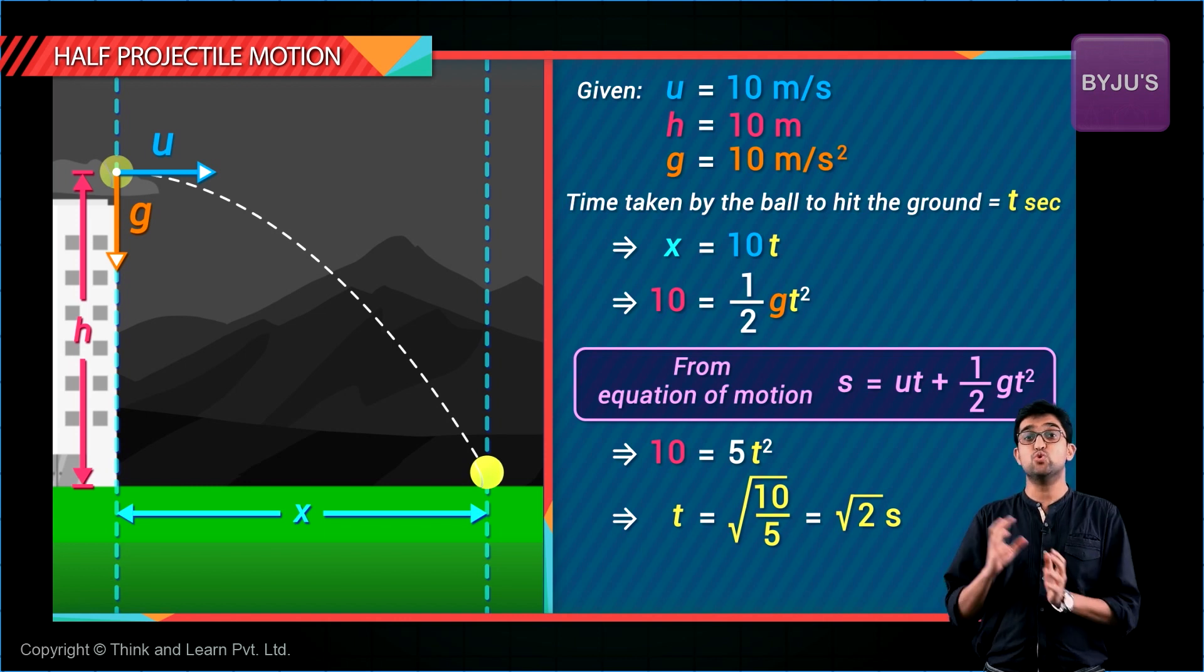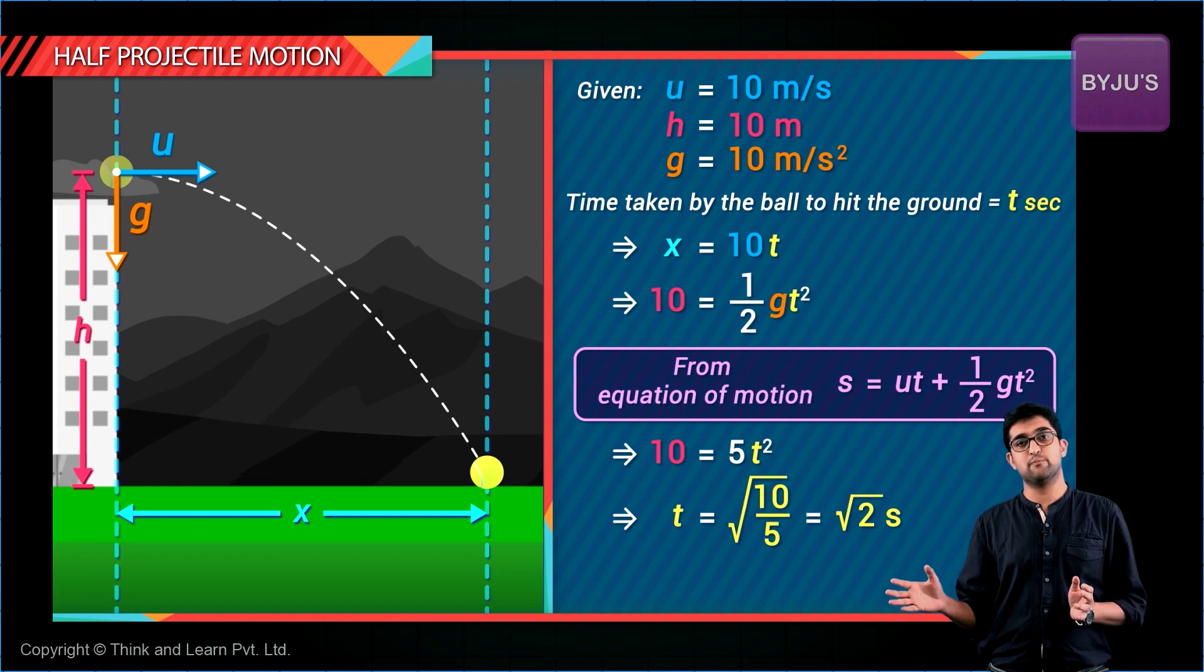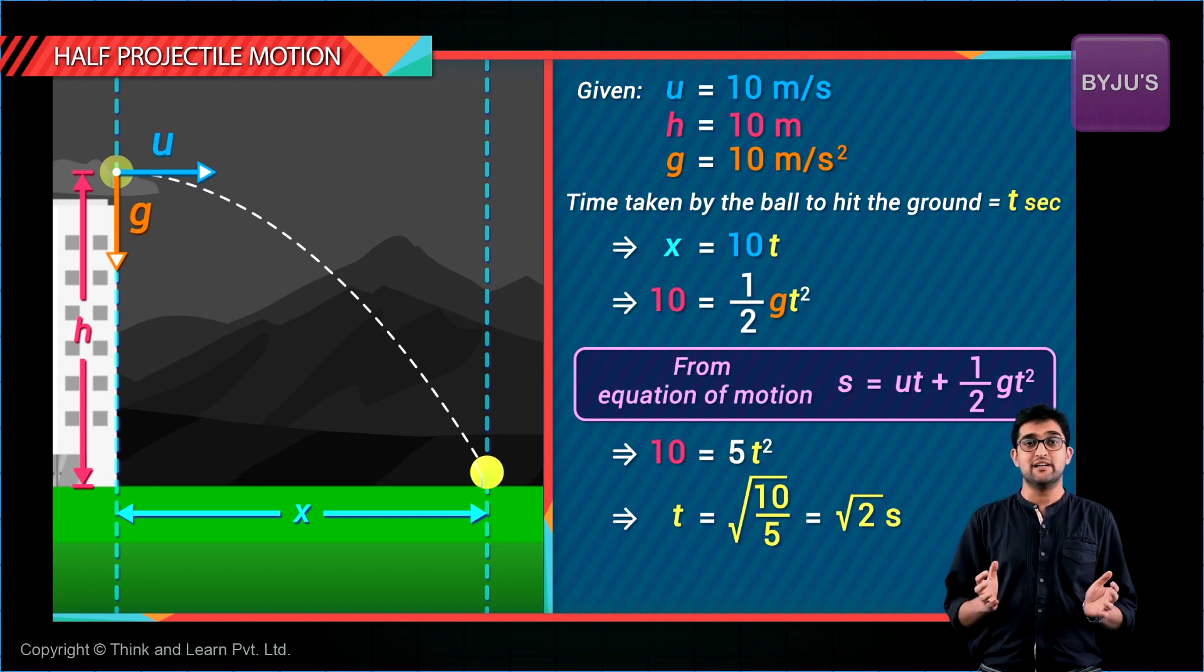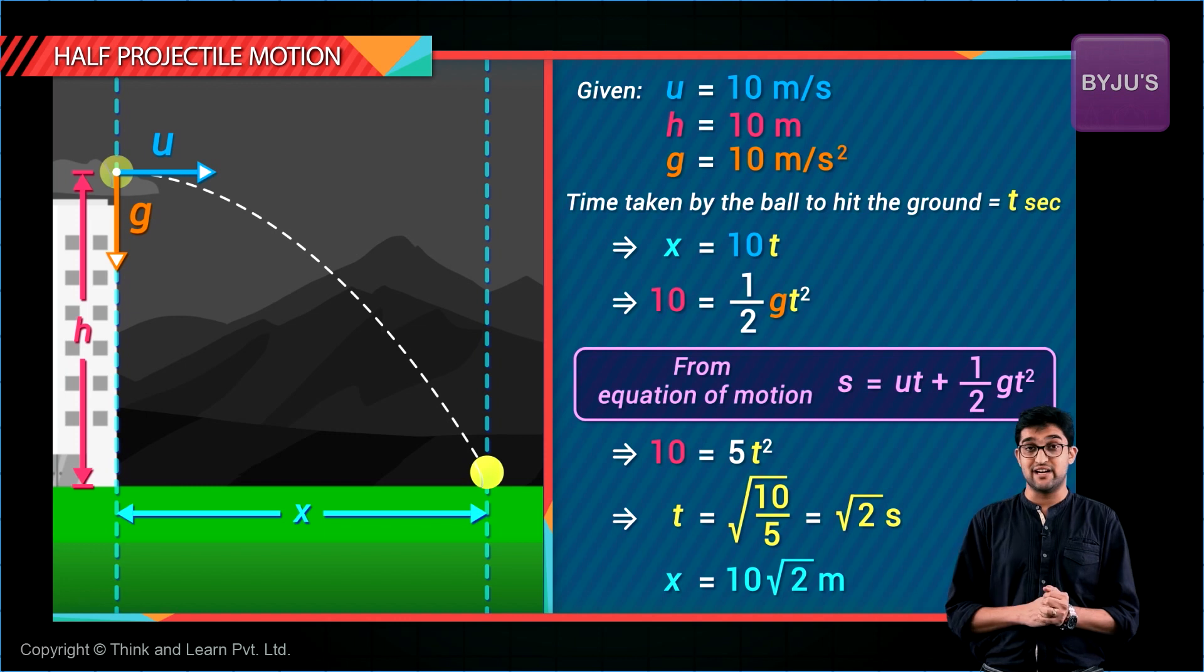So the ball takes root 2 seconds to hit the ground. So the distance at the point where it hits the ground will be nothing but root 2 into 10, that's 10 root 2 meters. Very simple.